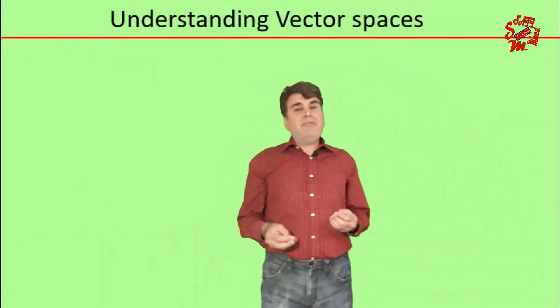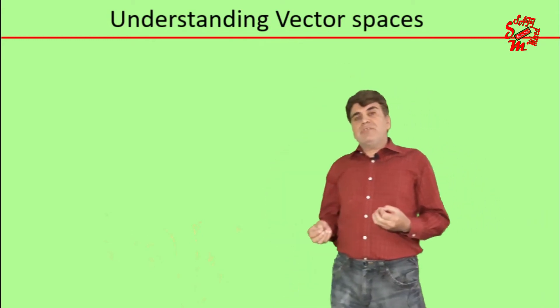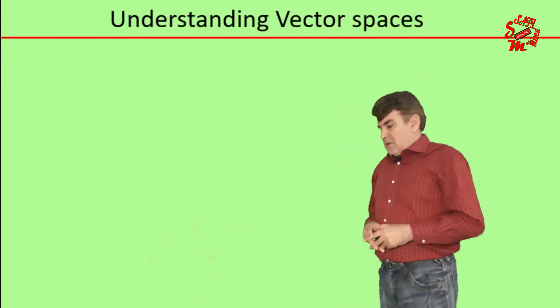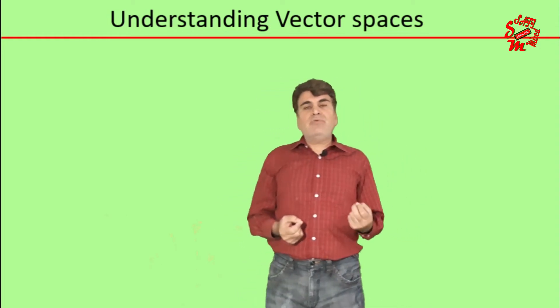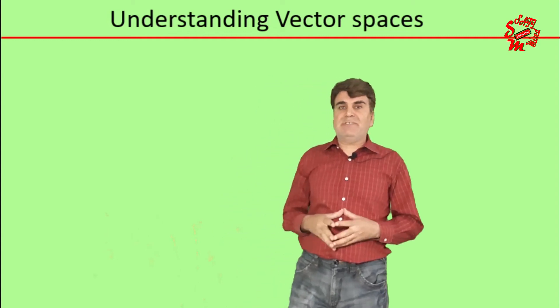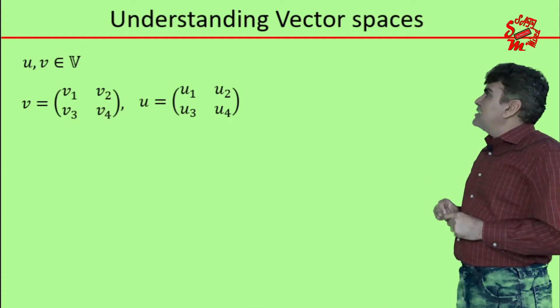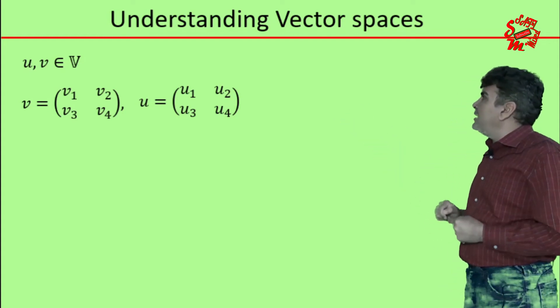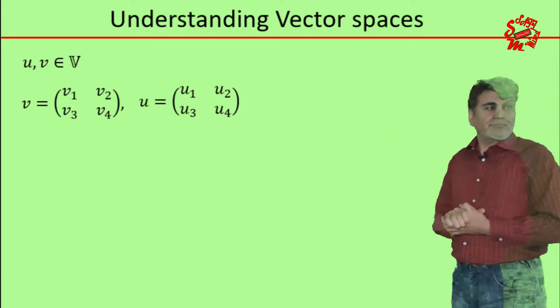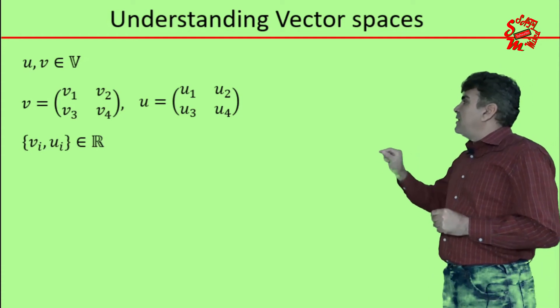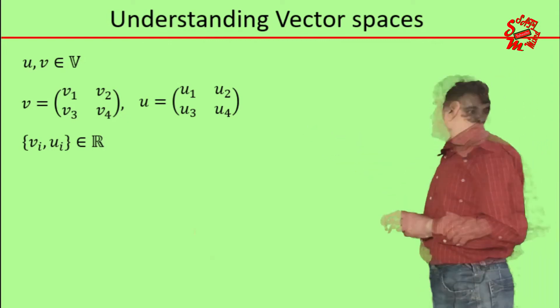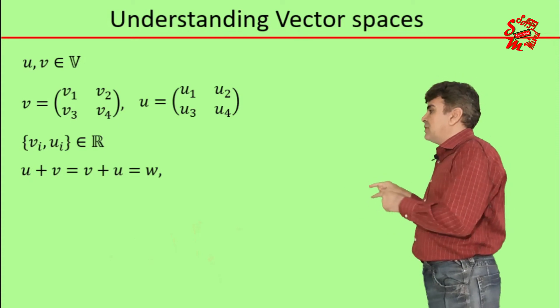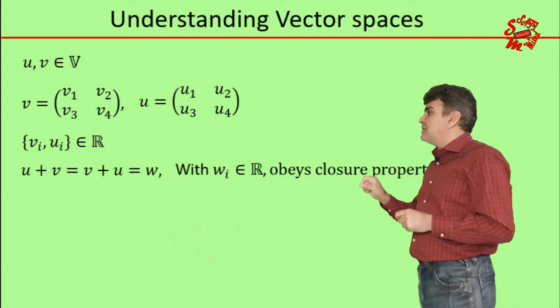Now let us look at another interesting example of square matrices and ask ourselves: can the set of square matrices constitute a vector space? The answer is yes, they do. In order to give a proof to this claim, let the elements u, v of vector space V be two-by-two square matrices, where the elements of each square matrix are represented by u1, u2, u3, and u4, and similarly the elements of v are given by v1, v2, v3, v4, where the elements vi and ui belong to the set of all real numbers R. Now it is very straightforward to add these two matrices and verify that u plus v equals v plus u equals another matrix w, where the elements of w are wi equals vi plus ui and belong to the set of real numbers R.